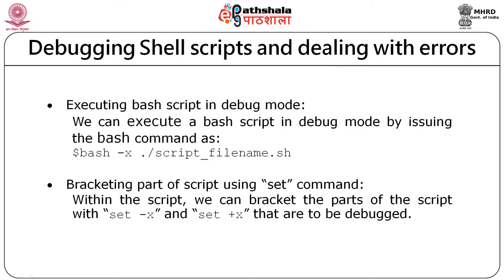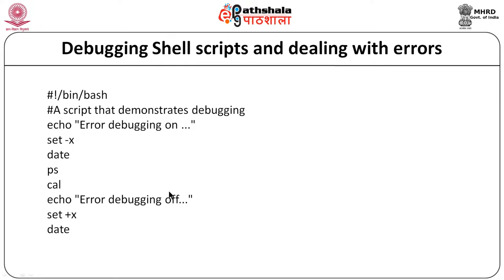Another way to enter debug mode is by bracketing sections of your script with the set command. If a program has a hundred lines, you place 'set -x' at the starting line of the section you want to debug and 'set +x' at the ending line. The commands between these two act as a bracket — only those lines will be executed in debug mode, while commands outside the bracket run normally.